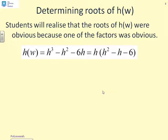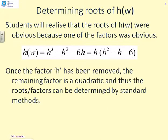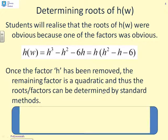And I can write it as h(h² - h - 6). So it's now factorized into a factor which is first order, and a factor which is second order. Once that factor h has been removed, the remaining factors are quadratic, and therefore you can use your standard quadratic methods to get the remainder of the roots.